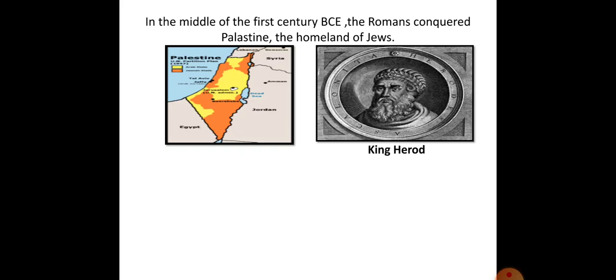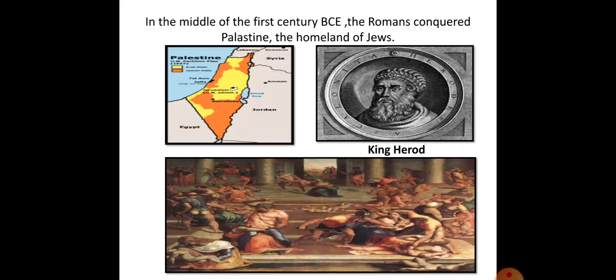After conquering Palestine, King Herod became the ruler of Palestine. He was a man who tortured and killed many Jews, which made him very unpopular. The Romans' practice of worshipping emperors as God infuriated the Jews further.